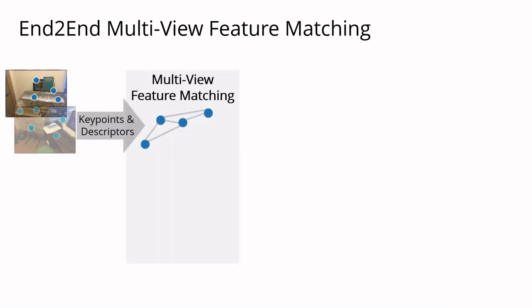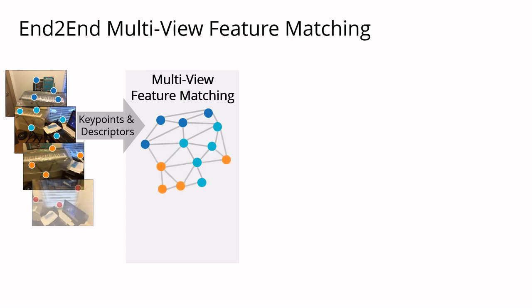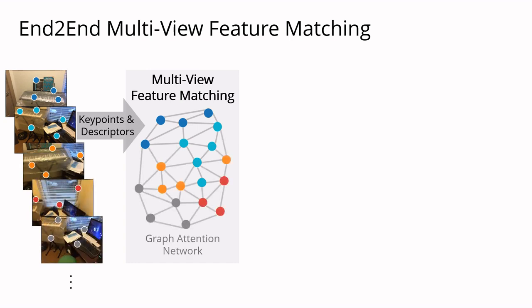Our method encodes keypoint descriptors from multiple images into a graph network for matching. During message passing, each keypoint interacts with keypoints from the same image through self-attention and with keypoints from all other images through cross-attention.